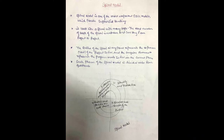In the spiral model there are many loops. The exact number of loops is unknown and can vary from project to project — it depends on how long and how complex the project is. The radius of the spiral at any point represents the cost of the project so far, and the angular dimension represents the progress made in the current phase.